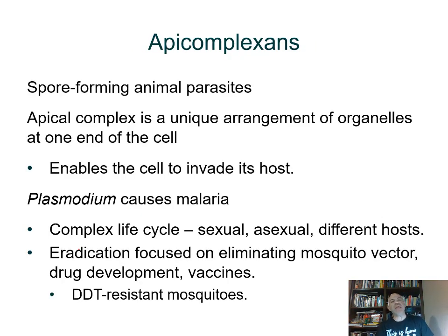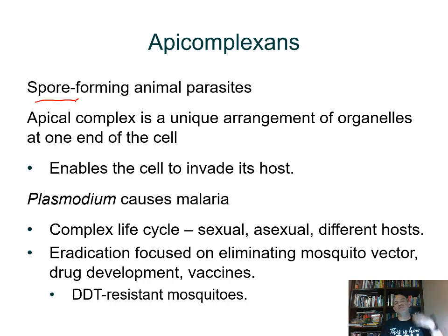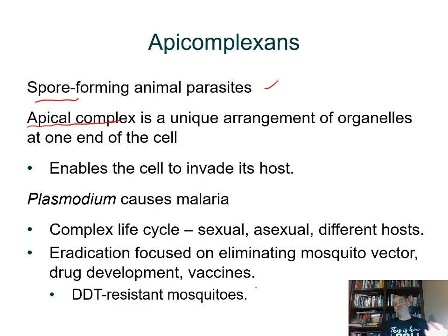Moving on to the apicomplexans — still within the alveolates of the larger group Chromalveolata. These are sometimes referred to as spore-forming, and some form cysts that help transmit to another host. These are all animal parasites. They get their name because within the alveolar sac they have an organelle called an apical complex that assists in invading host cells.